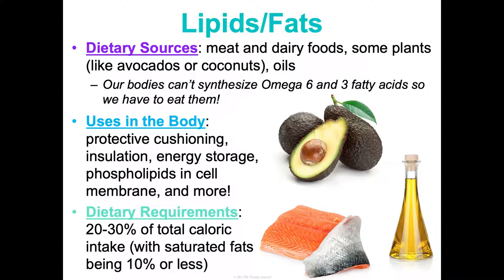Lipids and fats have many other uses: cholesterol is a precursor to bile salts and some steroid hormones; triglycerides serve as an energy source for skeletal muscles; and they help us absorb fat-soluble vitamins. For digestion, we take triglycerides and break them down into monoglycerides and fatty acids by emulsifying fats with bile salts. This breakdown happens in the stomach and small intestine. Some lipids can diffuse, but others use exocytosis to be transported into capillary blood, then to the liver and the rest of the body.